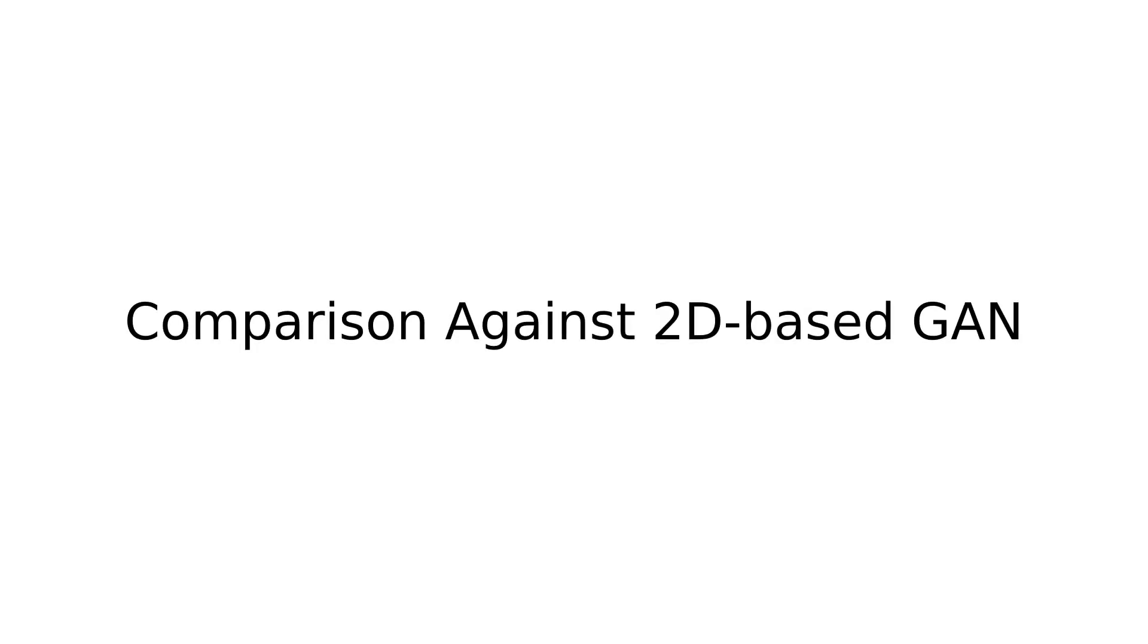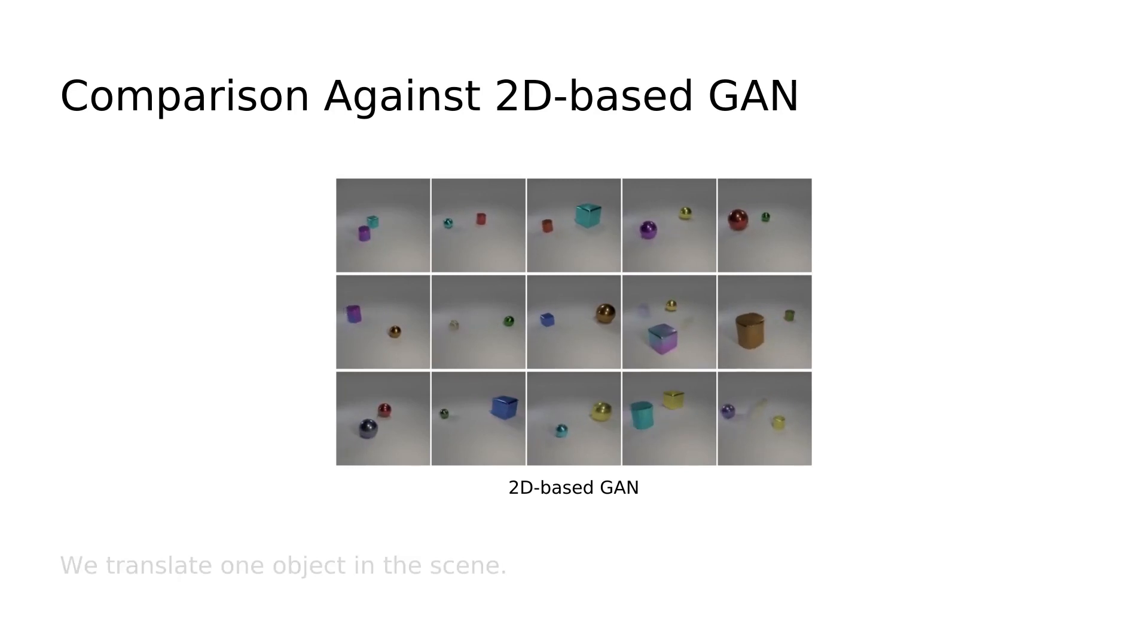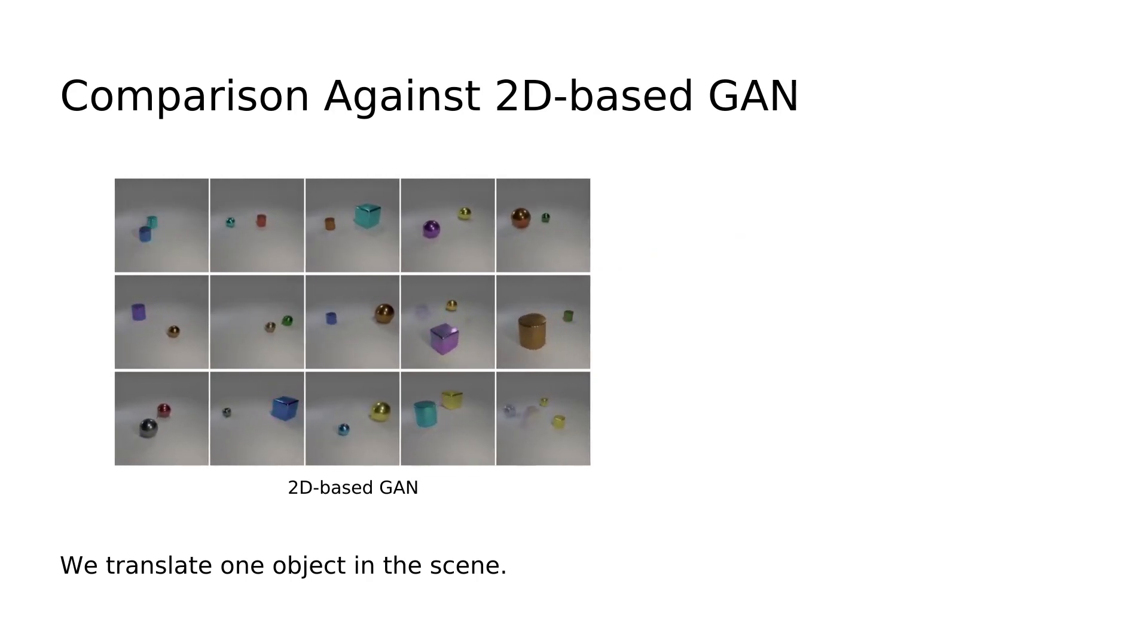Let's now have a look at some results. First we compare against a 2D-based GAN. Here we translate the left object in the scene. For the 2D-based GAN, we can see that factors of variation are entangled and translating one object also affects the other object.